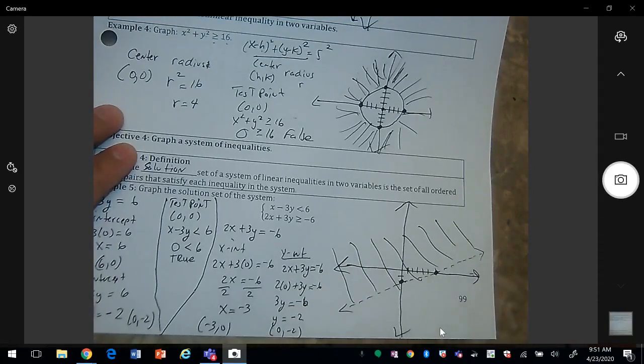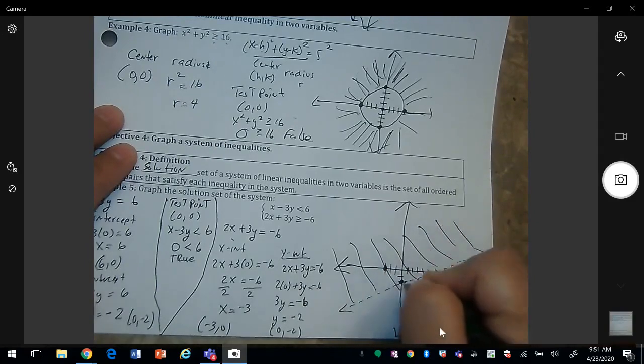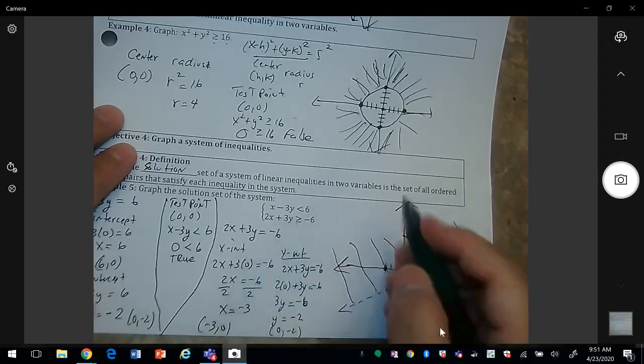Okay, so let's plot those points, negative 3 and 0, 0, negative 2. It is a solid line.